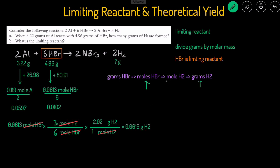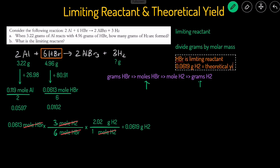So 0.0619 grams of H2 is the theoretical yield — that's how much product can be produced if this reaction was 100% perfect, or in other words, the maximum amount of product that can be produced. That's technique number one, the shortcut.